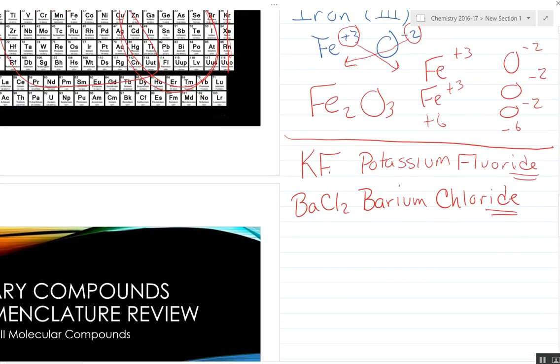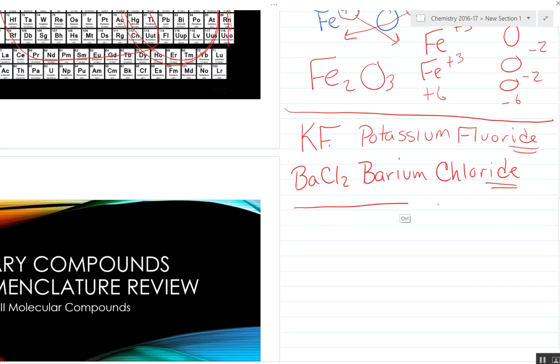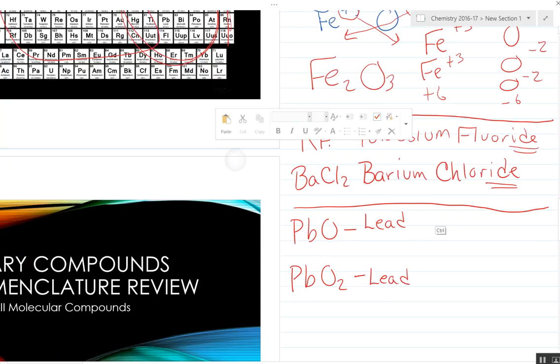And then finally, we have PbO and PbO2. Pb is lead, so we can write that down for both. But now it's going to be something oxide on both of them. But as you can see here, lead is down here and it sometimes has a different charge.